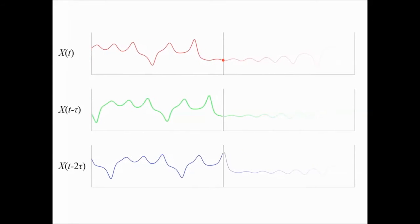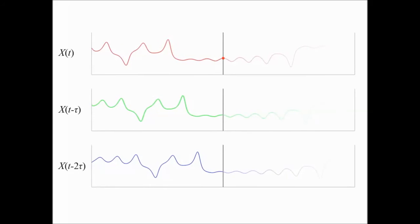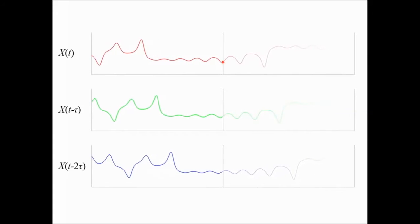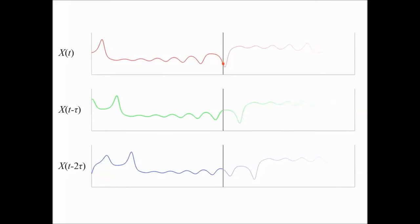Takens' theorem says that we should be able to use these three time series as new coordinates and reconstruct a shadow version of the original butterfly manifold. So let's see how this works.